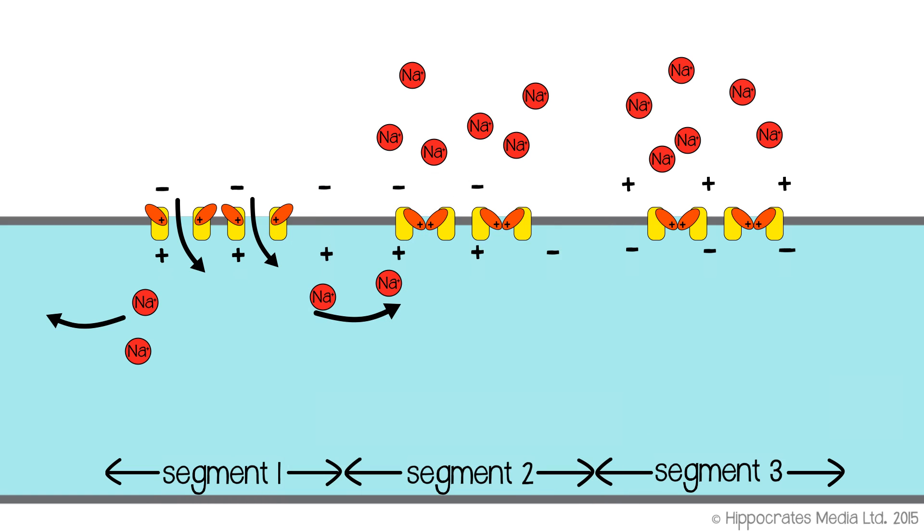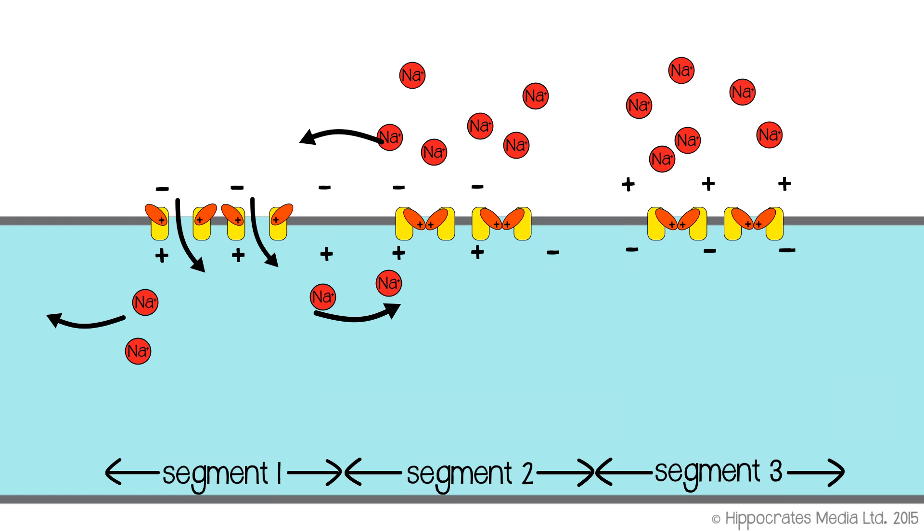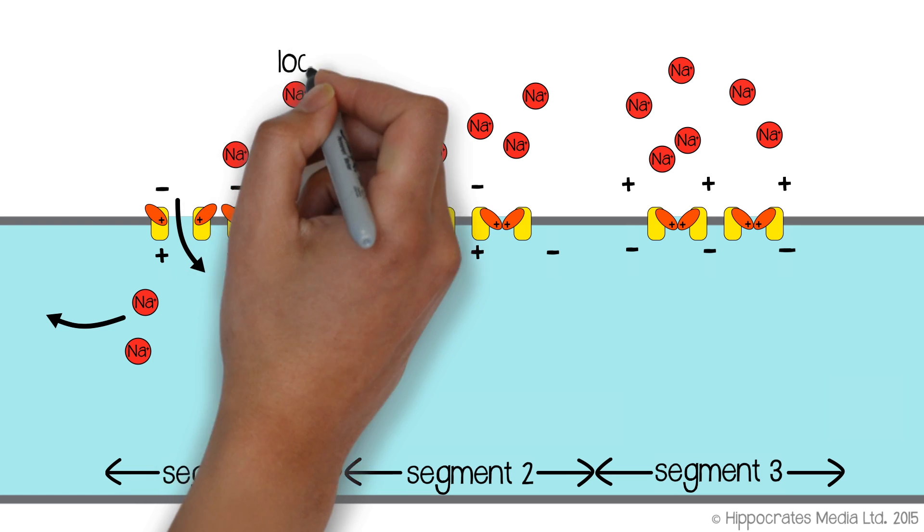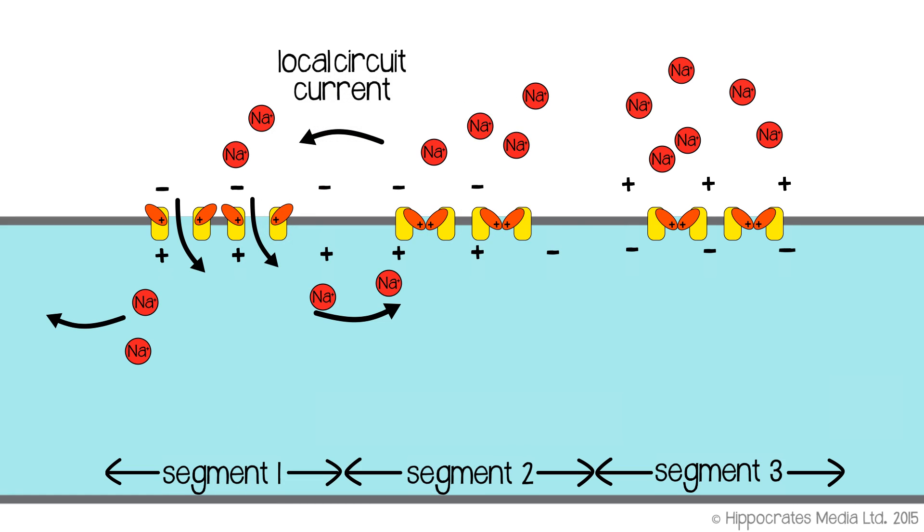Positive ions flow along the interior of the axon, and they will reach the next part of the membrane, the next segment, and they will depolarize the next segment. The next segment will become a little bit more positive because of those positive ions that have moved along the axon. If you're thinking about positive ions flowing along the axon on the inside, you also need to remember that there are also positive ions moving in the opposite direction on the outside of the cell. That completes what's called a local circuit current, and that local circuit current is what depolarizes the next part of the membrane.